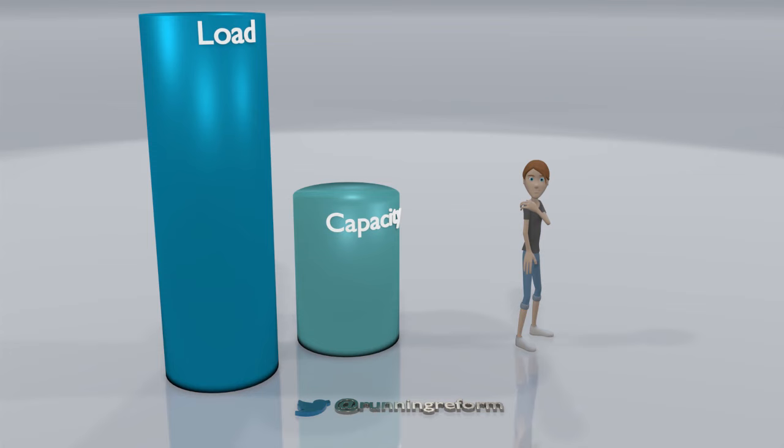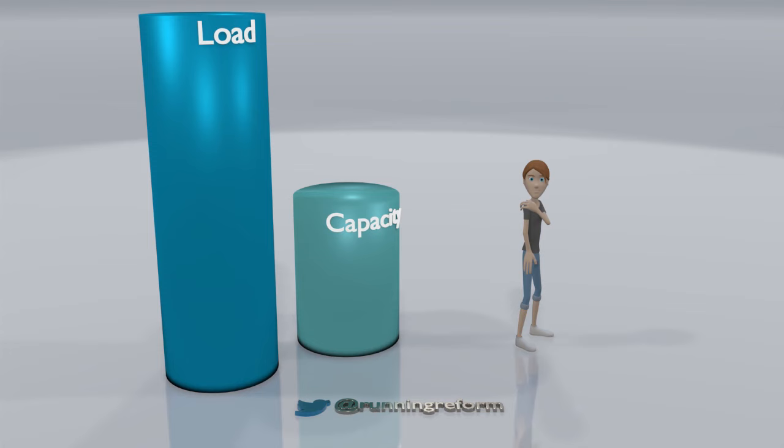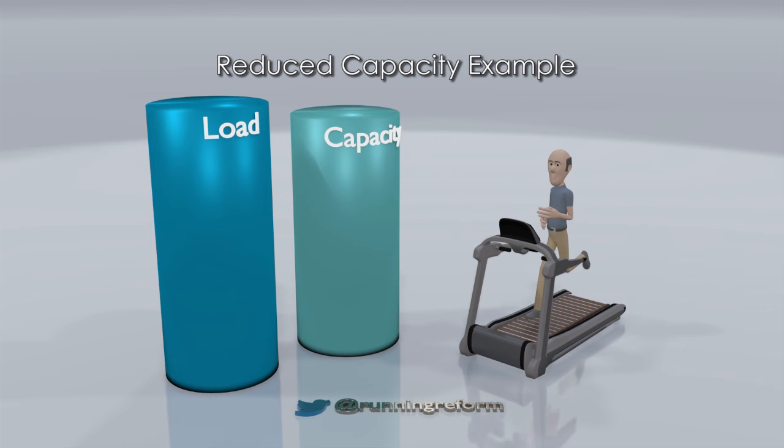In both these situations, the load is applied faster than the tissue can adapt. On the other hand, sometimes we're smart and we keep a workout routine or running load constant.